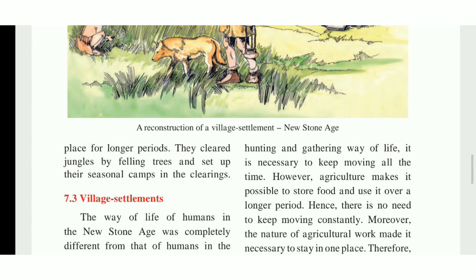Village settlements — how did village settlements emerge in the new stone age? In the old stone age, man lived in the forest and wandered from place to place in search of food. In the middle stone age, man lived in caves and tents erected in the open and hunted small animals. But in the new stone age, the way of life of humans was completely different. During this period, human beings became producers of food grains and learned to produce different types of food grains.